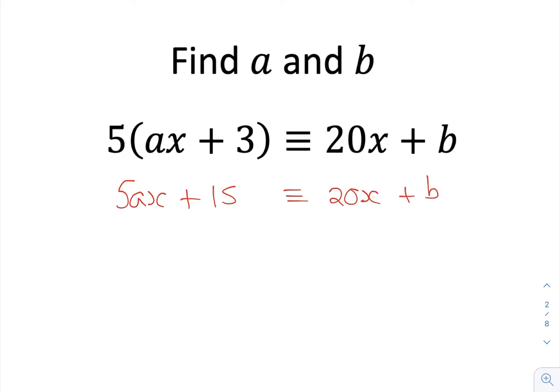And if I know that 5a here must be equivalent to 20, it's identical on the other side. So effectively what I'm saying is that 5a must be equal to 20, and that means that a has to be 4.